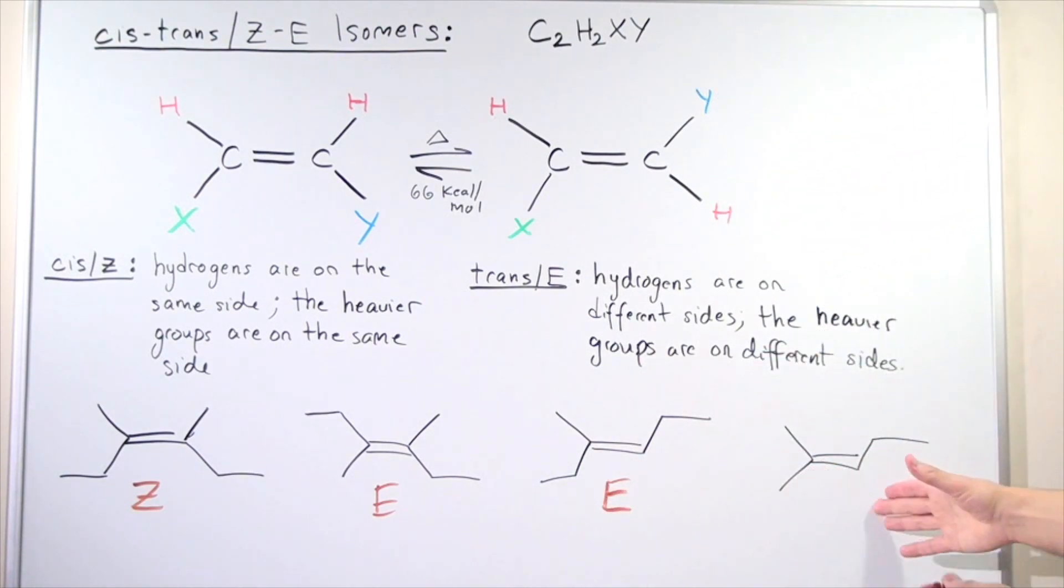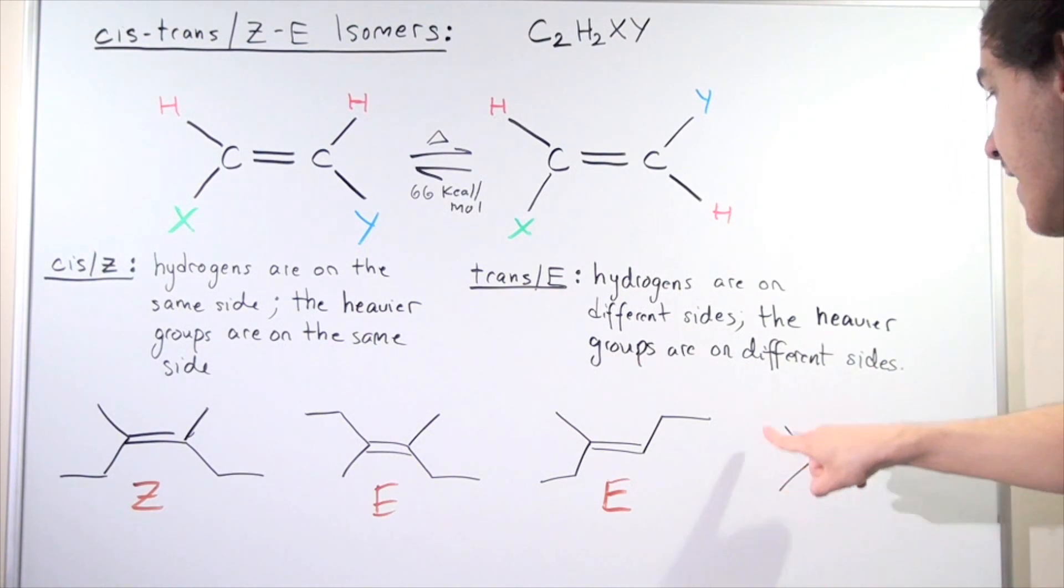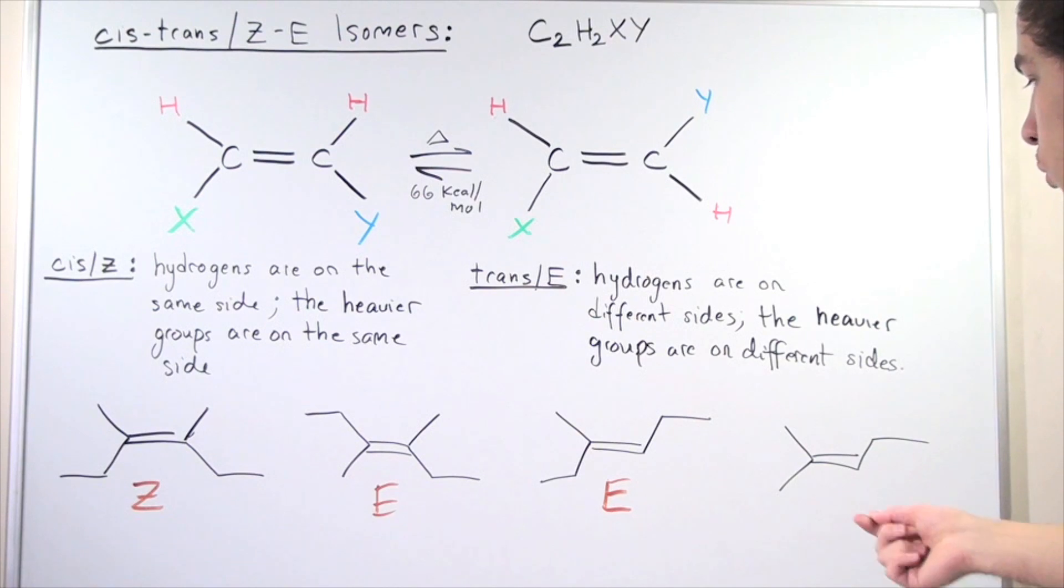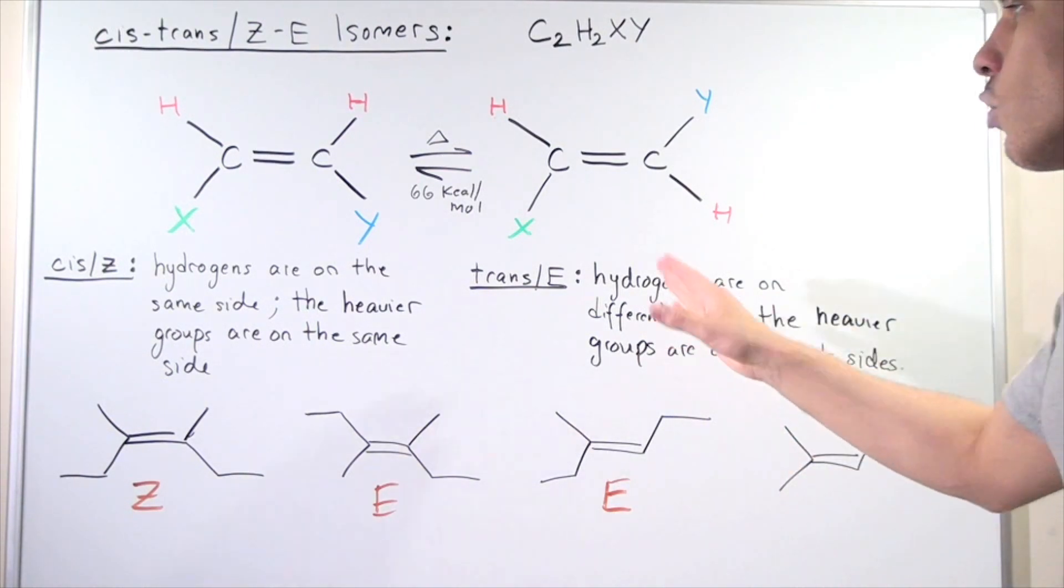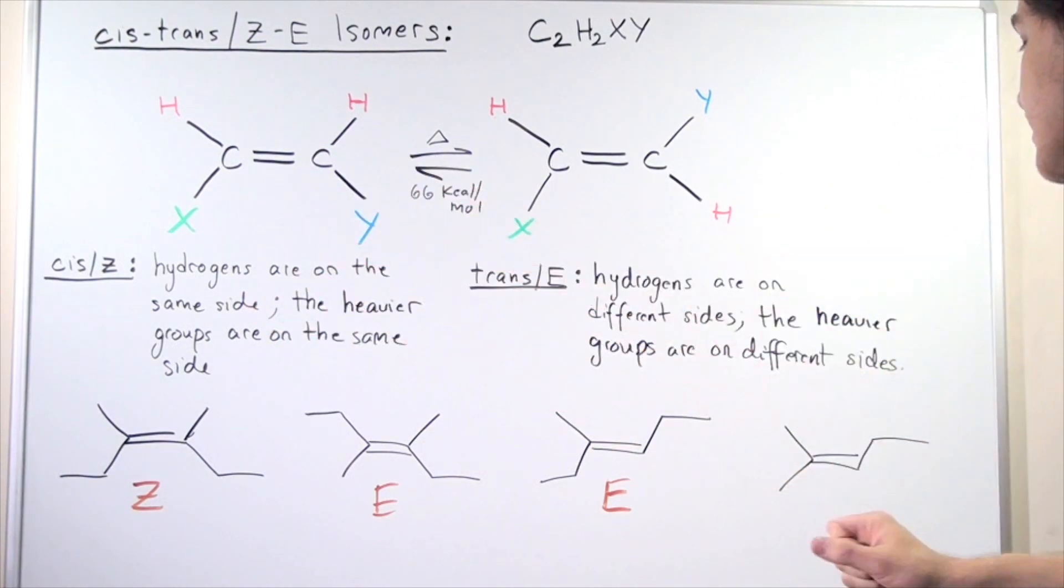Well, what about this last one? Here we have two methyl groups attached to the same carbon. So these two groups are identical. And that means there's no way to distinguish between these two guys because they have the same exact weight. And that means there are no isomers of this compound. E or Z or cis or trans do not exist for this guy.